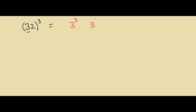For this method, we have to write it like this: first take the first digit and write 3 cube, 3 square, and 3. Then take the second digit which is 2 and write 2 cube, 2 square, and 2. The calculations give us: 3 cube is 27, then 18, then 12, then 4, and 2 cube is 8.